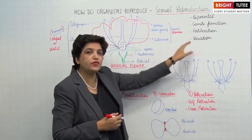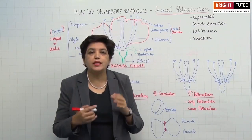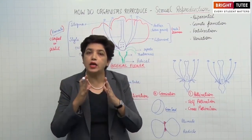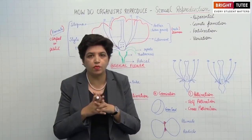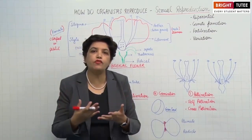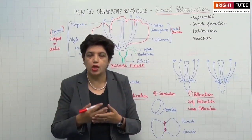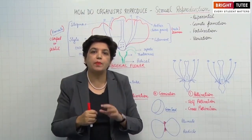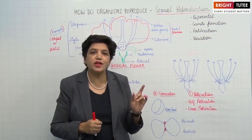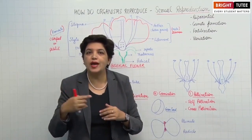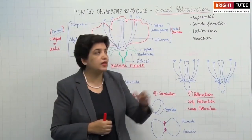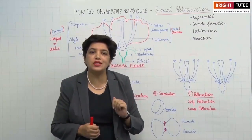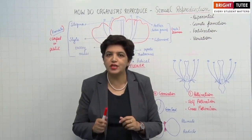The next feature is variation. Since half the chromosomes come from the male and half from the female, a new combination of chromosomes or DNA is formed. This leads to a lot of variation from generation to generation — the offspring are similar to the parents but are not exact copies. This variation helps in evolution and adapting to the environment.